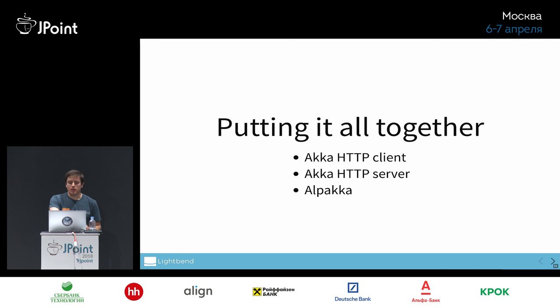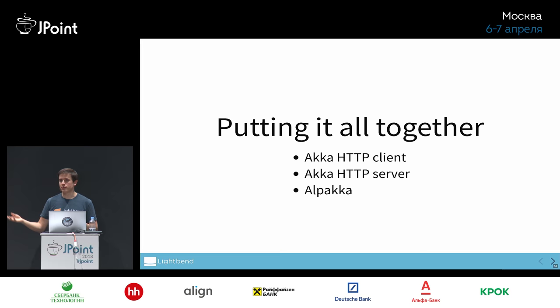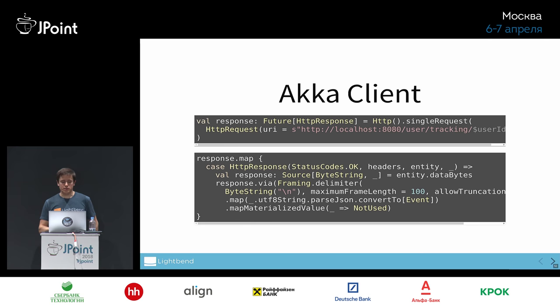We're going to use an Akka HTTP client, an Akka HTTP server, and something called Alpakka. Alpakka is a library of Akka Streams connectors built by the community — users of Akka Streams who want to build sources or sinks for their favourite database or queuing system. They understand those systems far better than we do, so they know how to translate flow control from Cassandra or RabbitMQ. The big example is in Scala but it's very similar in Java — I can show you both in the IDE.